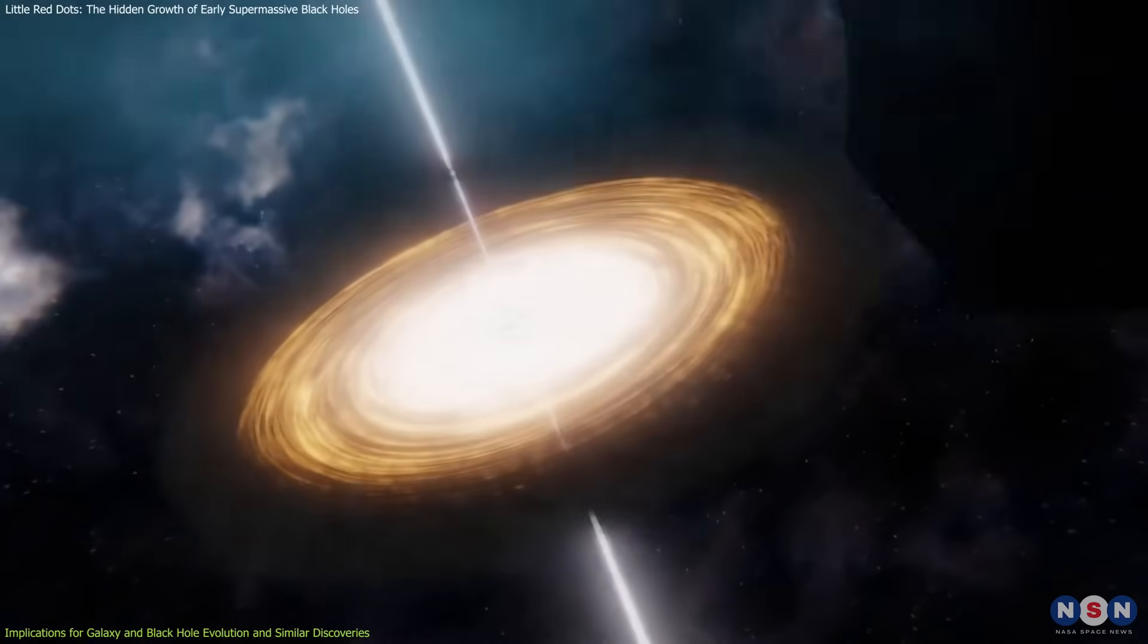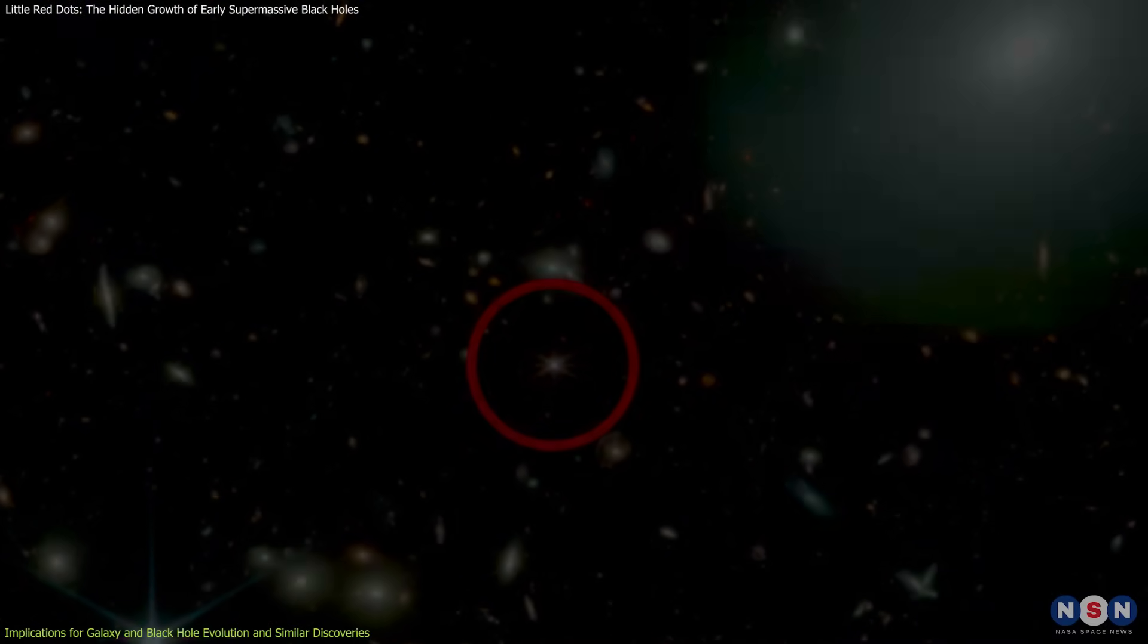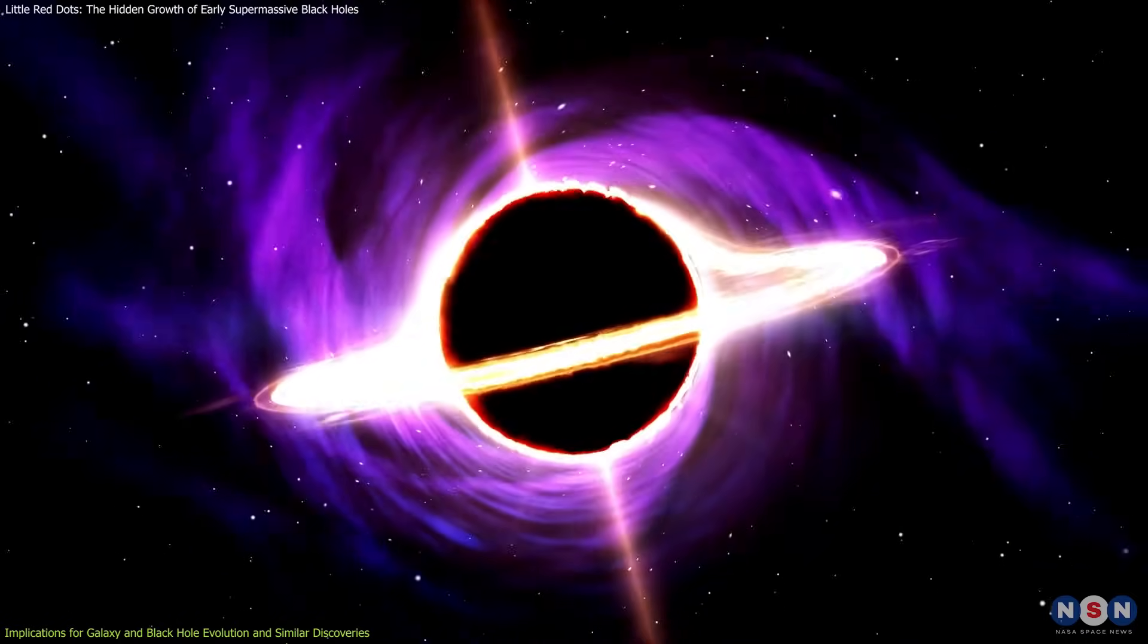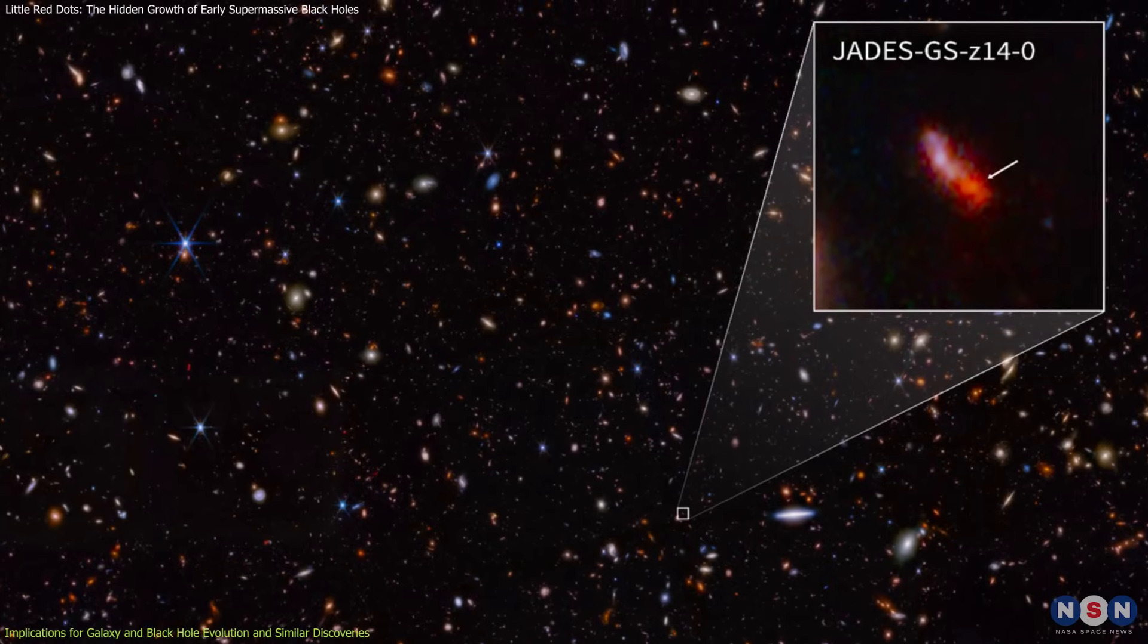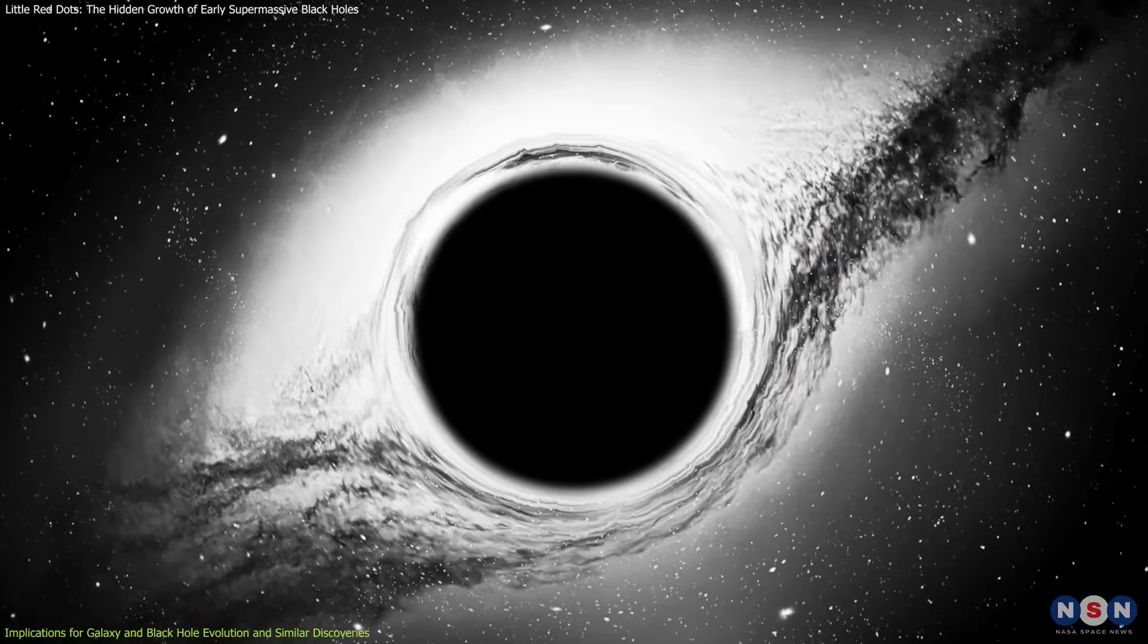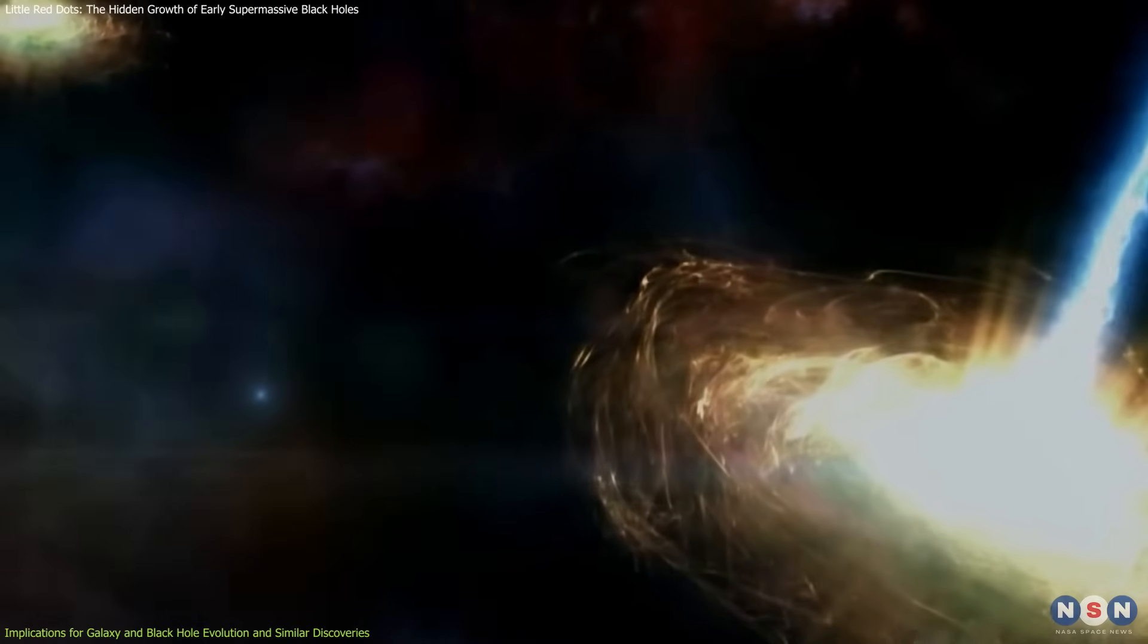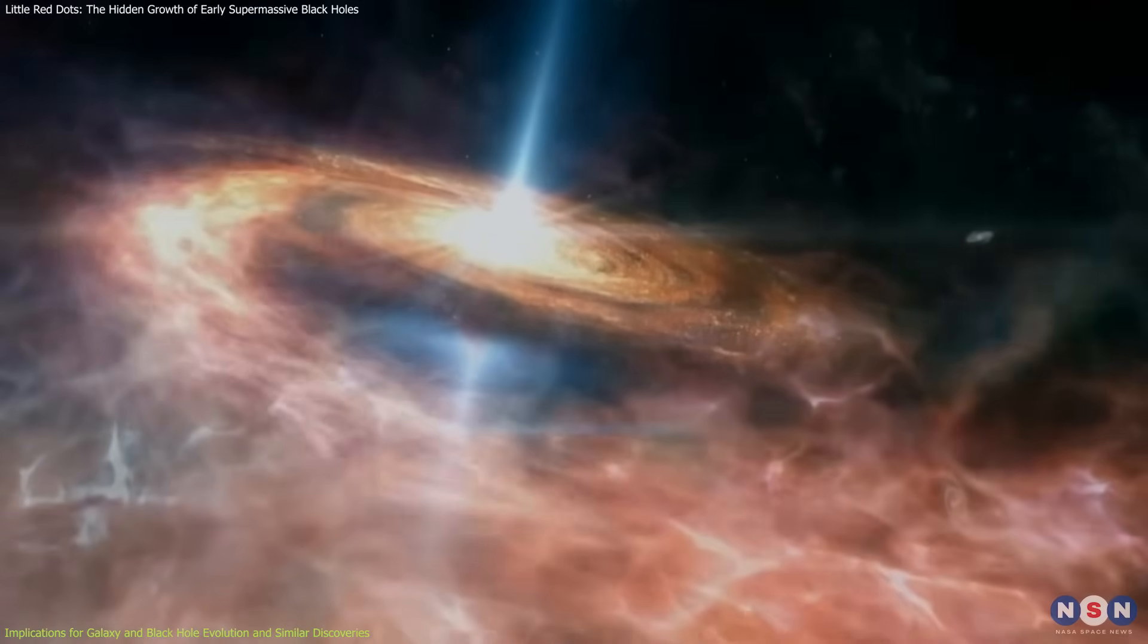One intriguing comparison is the early quasar population. Some distant quasars discovered by Webb exhibit rapid black hole growth patterns, suggesting that early black holes could accumulate mass at extraordinary rates. Similarly, the JADES-GS-z14-0 galaxy, one of the most distant galaxies ever detected, contains a surprisingly large black hole for its age. These discoveries reinforce the idea that the early universe may have been filled with rapidly growing black holes, fueling the formation of galaxies in ways we don't yet fully understand.